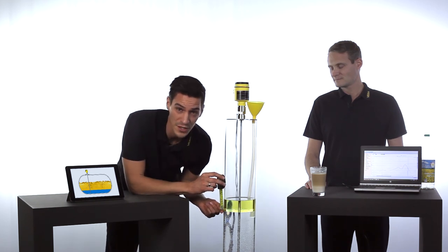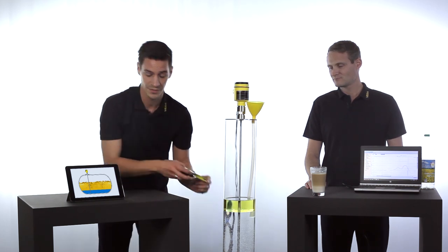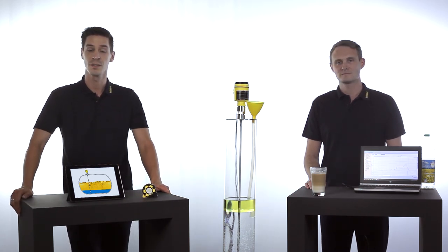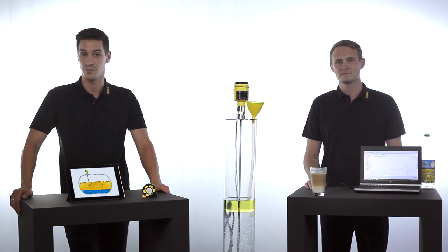It is 5 centimeters, which means that the VegaFlex series 80 can distinguish the two media beginning from a minimum layer thickness of 5 centimeters. That's world-class performance and gives you the safety for reliable measurement.